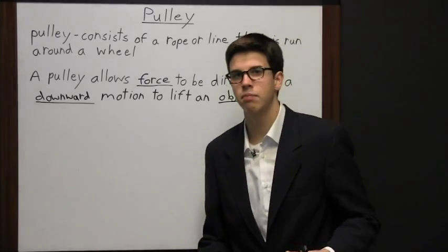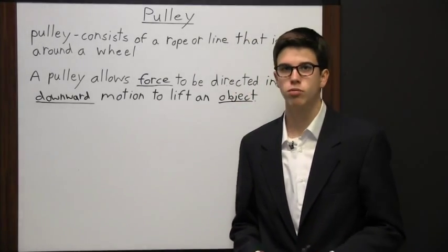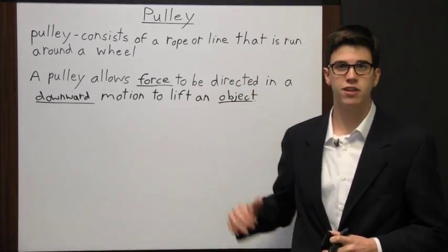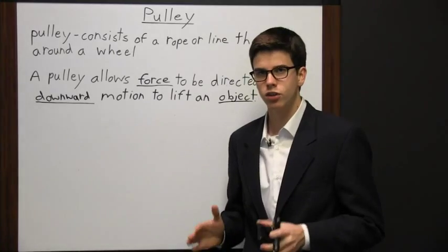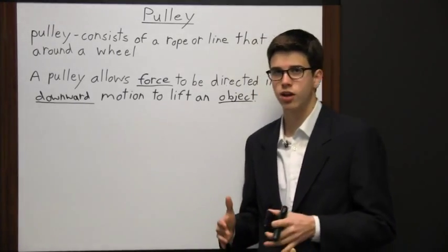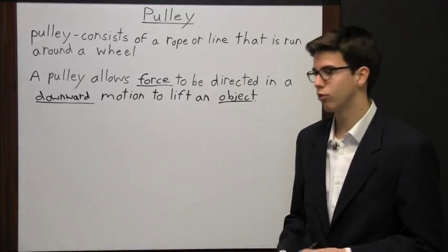So say you had a 10 pound object that you needed to move 50 feet in the air. You're going to have to attach a rope to it and pull that rope in an upward motion 50 feet to get that object suspended 50 feet in the air. Now if you use a pulley it makes this work much easier. You're still having to apply the same amount of force, but you're able to apply that force in a downward direction.